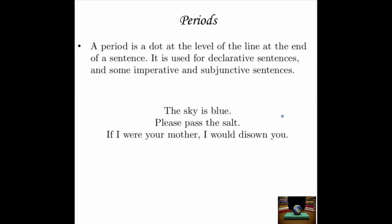What is a period? A period is a dot at the level of the line at the end of a sentence — it's on the same level as the line on which the words rest. It is used for declarative sentences and some imperative and subjunctive sentences. Examples: 'The sky is blue.' 'Please pass the salt.' 'If I were your mother, I would disown you.'